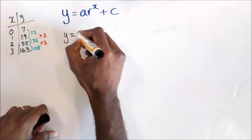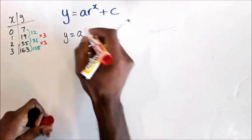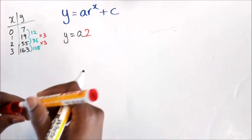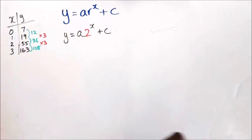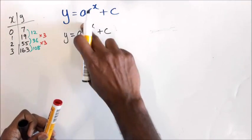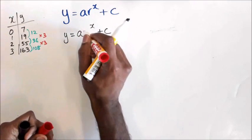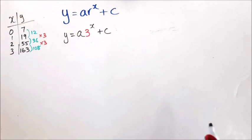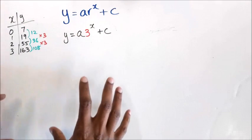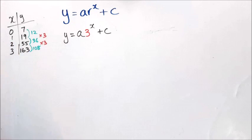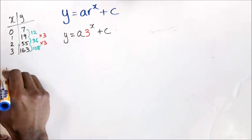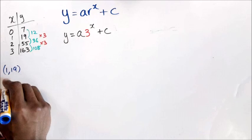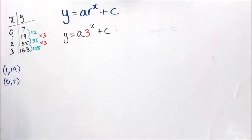My equation is going to look like y equals a times 3 to the power of x plus c — not 2, it should be 3, because my ratio is 3. Once I have this, my next step is to create simultaneous equations, choosing two points: (1, 19) and (0, 7).